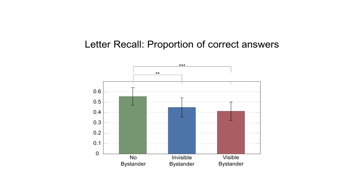For the study, we recruited 42 participants, equally distributed across the three conditions regarding age, gender, and level of education. We analyzed the correctly-remembered letter pairs of the three conditions with the Kruskal-Wallis test and subsequently applied a Dunn-Bonferroni post-hoc test.